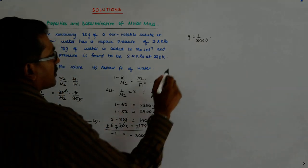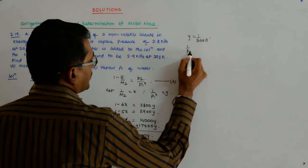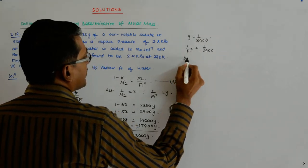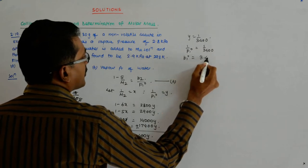And what is y? y is 1 upon P0. So 1 upon P1_0 is equal to 1 by 3400. So P1_0 is equal to 3.4 kilopascal.